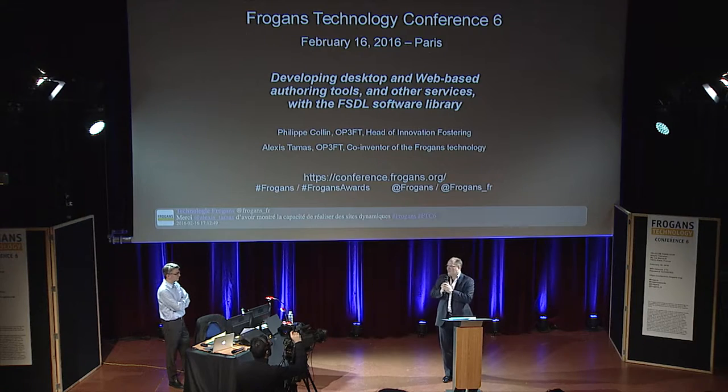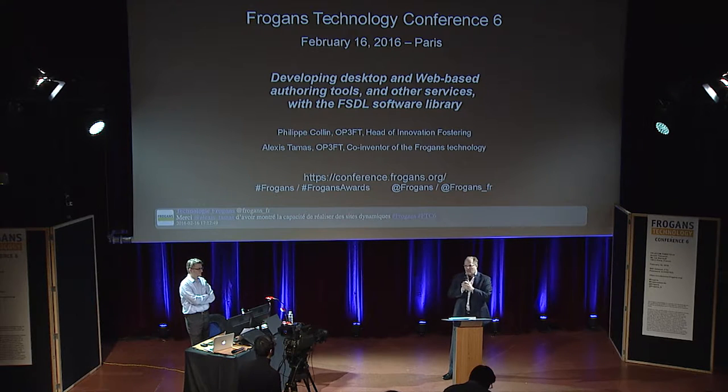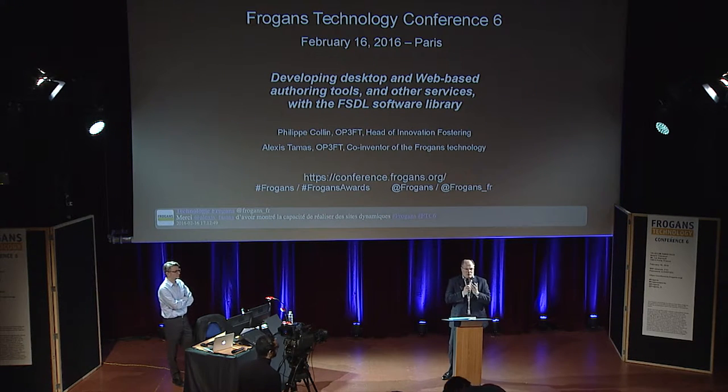FSDL is the Fragon's site description technology. It's a piece of software that can be downloaded and installed on computers and servers — it handles the rendering of FSDL elements. It's used by the Fragon's player; you can't see it because it's packaged, but it's there. We've separated it from the Fragon's player, given it its own identity, and made it available free of charge, so other software publishers can include it in their own information systems.